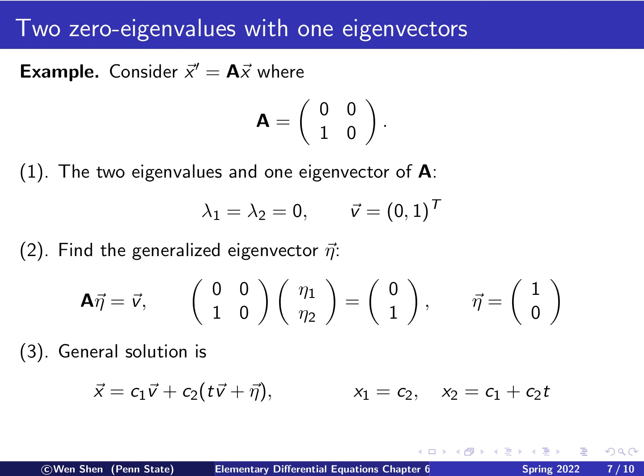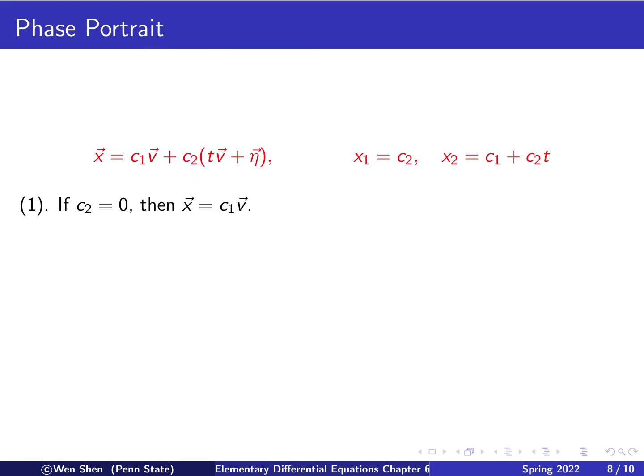Now we can form the general solution with just the formula for the improper node. So x equals c1 times v times e to the lambda t, which is lambda zero, so that's just one. So we've got a constant vector, plus c2 times t times v bar times eta. And there is also the exponential function, which is one here, because the exponent is zero. And then knowing that here v is (0,1), and eta is (1,0), we can use that knowledge and put that into these two vectors, and we can write out the components. So here we'll have x1 is just c2, and then x2 is c1 plus c2 times t.